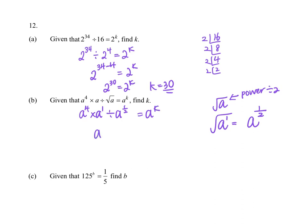So this will be a to the power of — when multiplying, what happens to the power? 4 plus 1 is 5, minus a half: a to the power of k. So this is a to the power of 4 and a half. Therefore k equals 4 and a half.